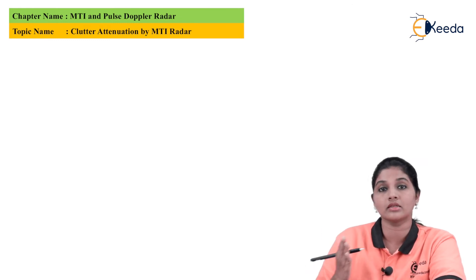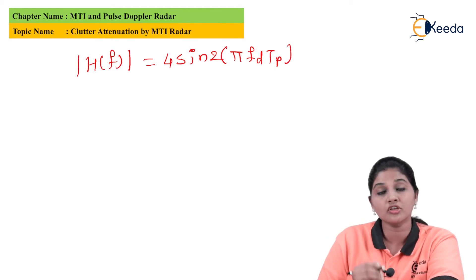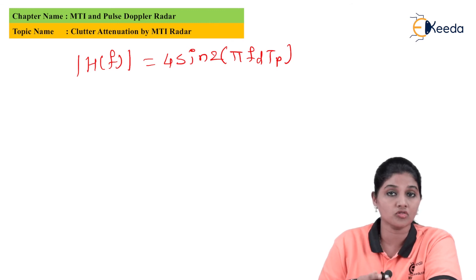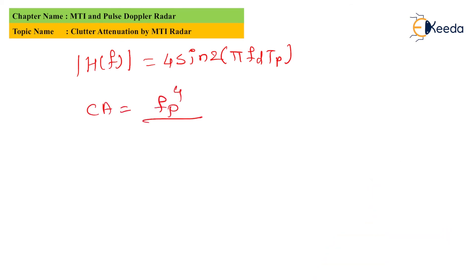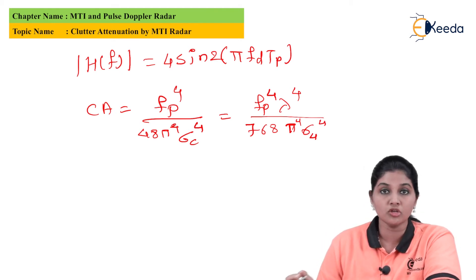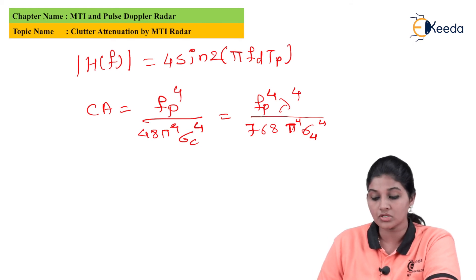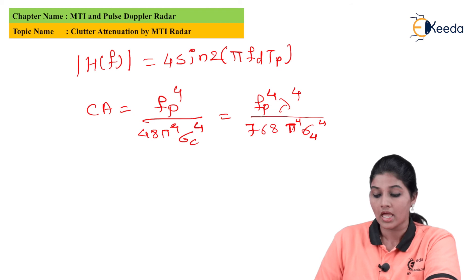The frequency response of the second delay line canceller is given as |H(f)| equals 4·sin²(π·f_d·T_p). Since we are using two single delay line cancellers, the clutter attenuation of the cascade network consisting of two single delay line cancellers is given as f_p⁴ divided by (48π⁴·σ_c⁴).